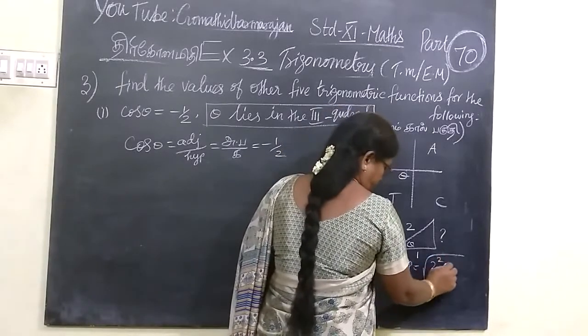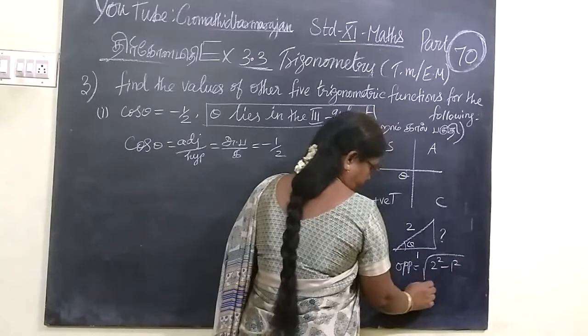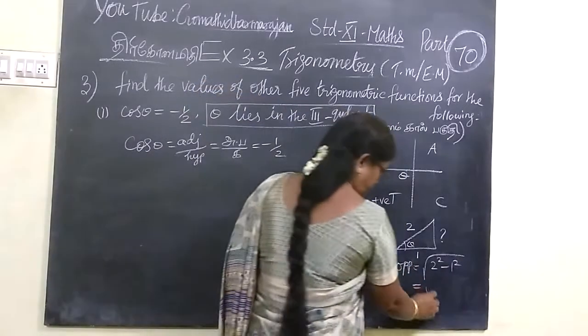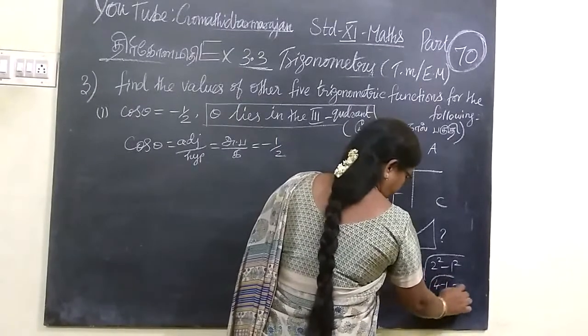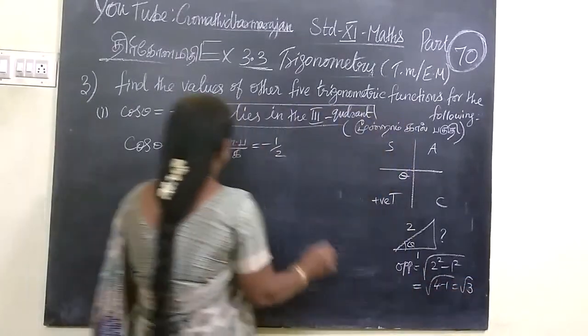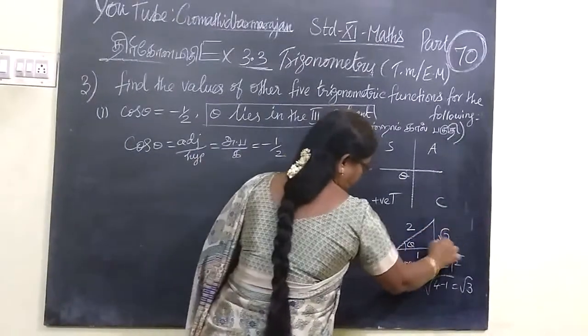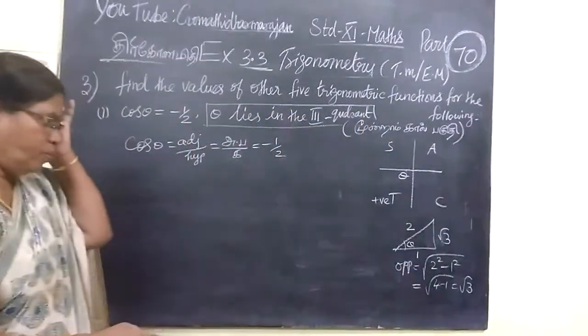Opposite side equals root of 2 square minus 1 square, that is hypotenuse 3 square minus adjacent side square, therefore 4 minus 1, that is root 3. So this value is root 3, because 2 squared is 4 minus 1 equals root 3.